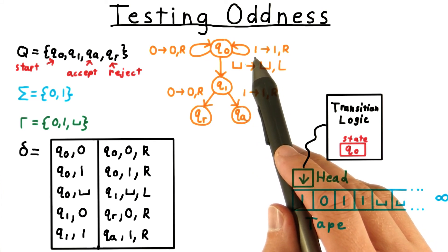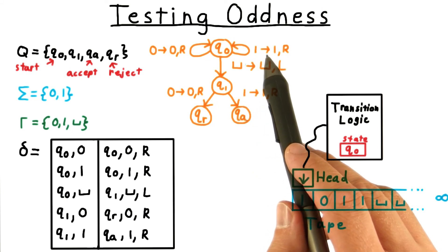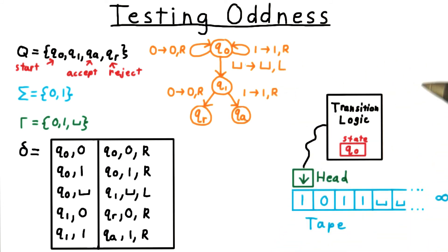That is, it gets the symbol read, followed by an arrow, then the symbol to write, and the direction to move the head.